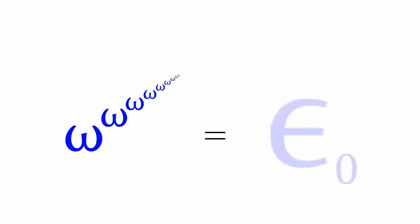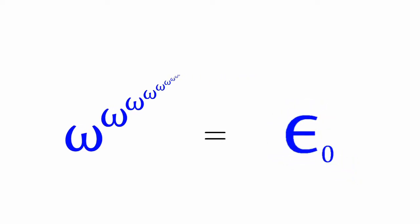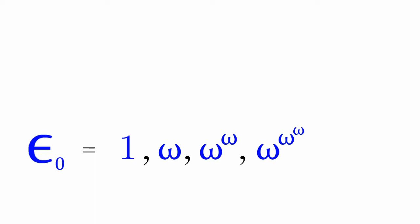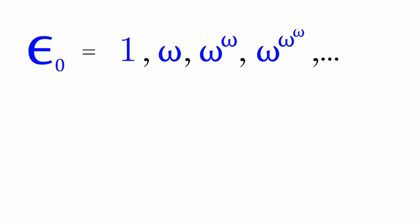We had omega to the power of omega an infinite number of times. This is equal to epsilon naught. The counting sequence for epsilon naught is 1, omega, omega to the omega, omega to the omega to the omega, and so on and so forth.